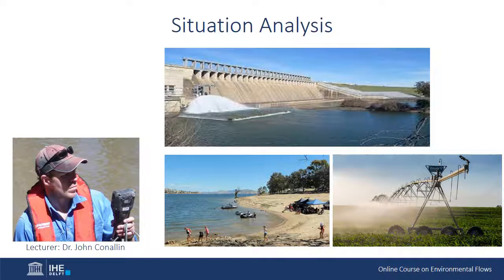That's actually because the dam now releases water from the bottom, which is much colder than it was naturally. Towns and farms along the river downstream are now used to a certain way of water releases from the dam that have been in place for over the last 50 years.